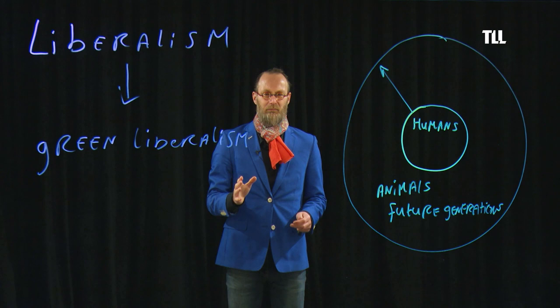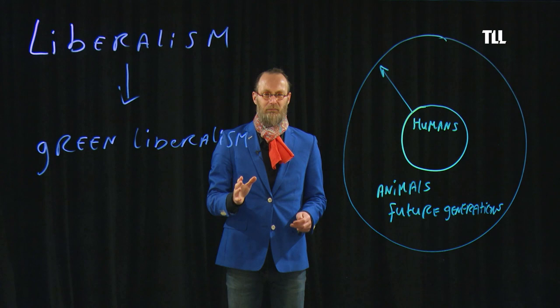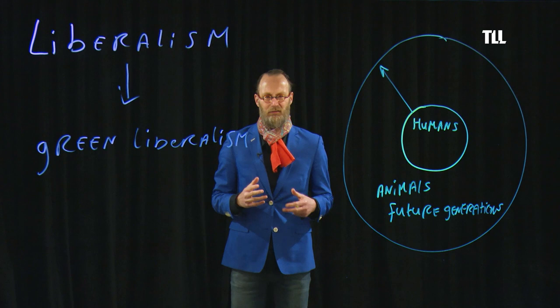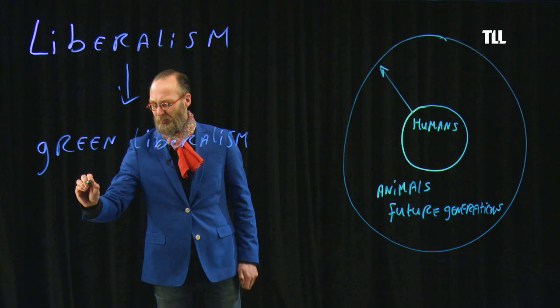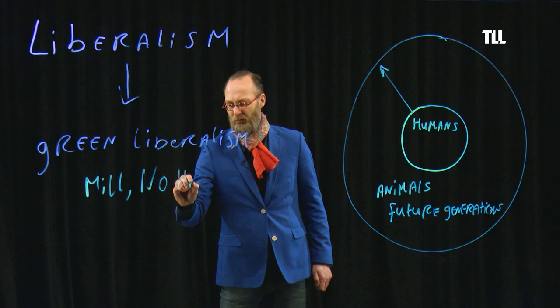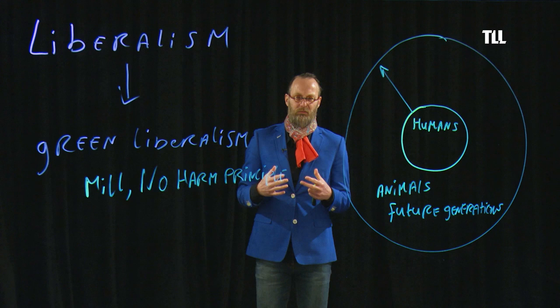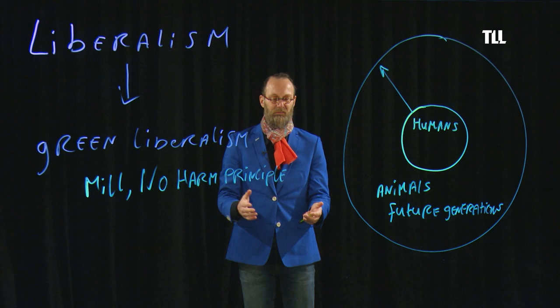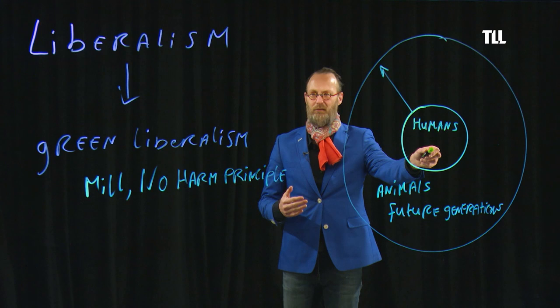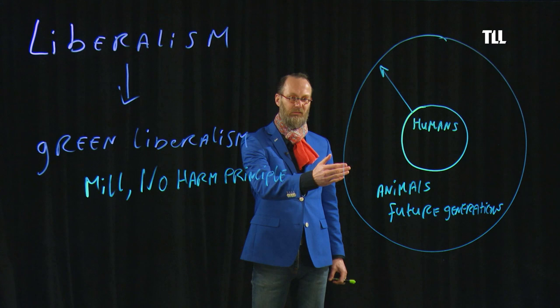Basically liberalism stays the same. Liberalism means everything is allowed as long as you do not harm others — this is the so-called no harm principle by John Stuart Mill. That means you can do anything you want as an individual as long as you are not harming any others. This principle was understood to only apply to humans — you can do anything you want as long as you do not harm other human beings.